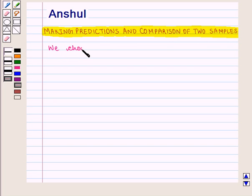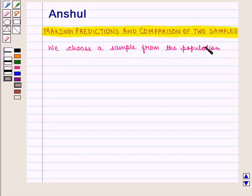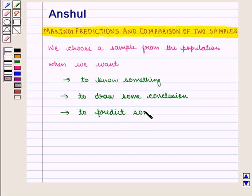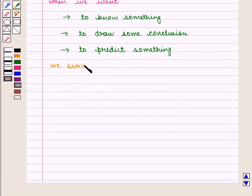We choose a sample from the population when we want to know something, or to draw some conclusion, or to predict something. And then we survey the sample and draw the required result.